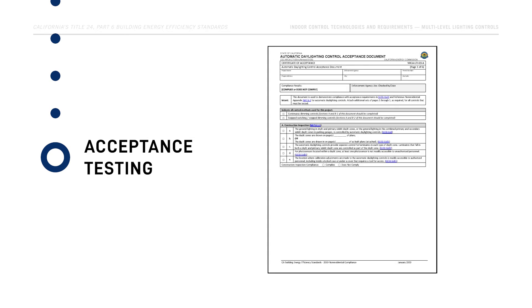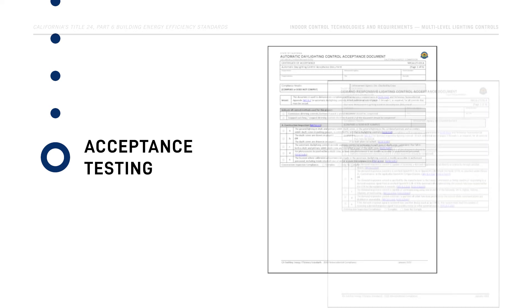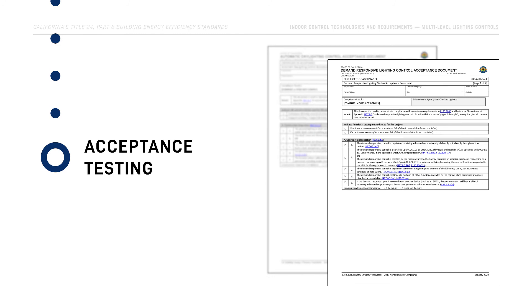Acceptance testing is not required for multi-level lighting controls. However, the control steps they deliver will be verified as part of the acceptance tests for other control types, such as automatic daylighting controls and demand response controls. Test results for these device types are documented on Certificate of Acceptance Forms NRCA-LTI-03-A and NRCA-LTI-04-A.